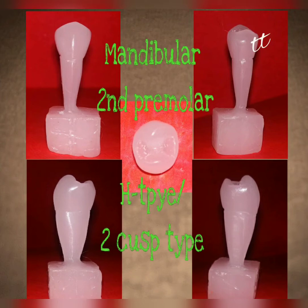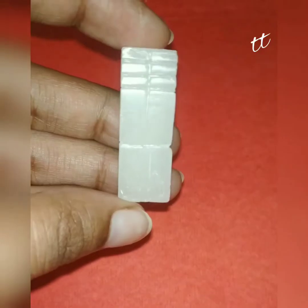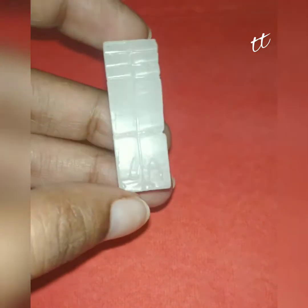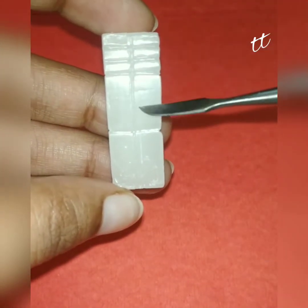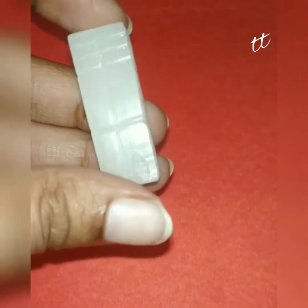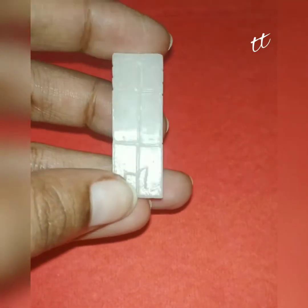In this video, I am going to show you the carving of the mandibular second premolar, two-cusp type. We have to take a wax block and mark the midline on each surface, and also label it as buccal, lingual, mesial, and distal.